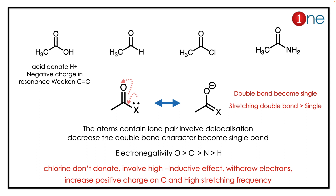Then comes amide — amide easily donates because nitrogen has low electronegativity. Aldehyde has no donor atom effect. But acid chloride is interesting: chlorine is electronegative and does not allow electrons to participate in conjugation, so it has a very high C=O stretching frequency.